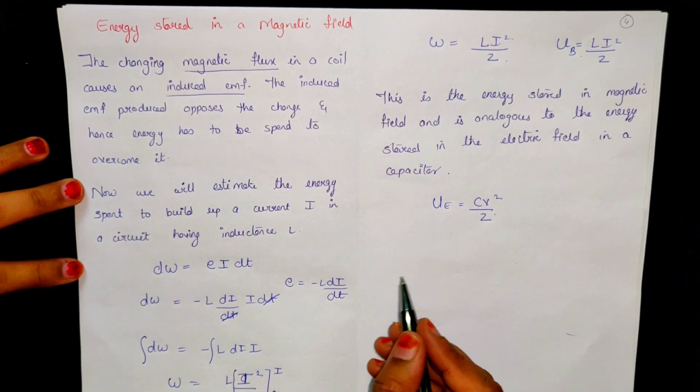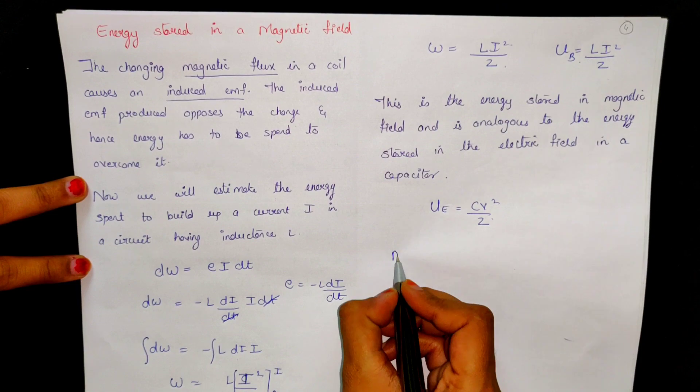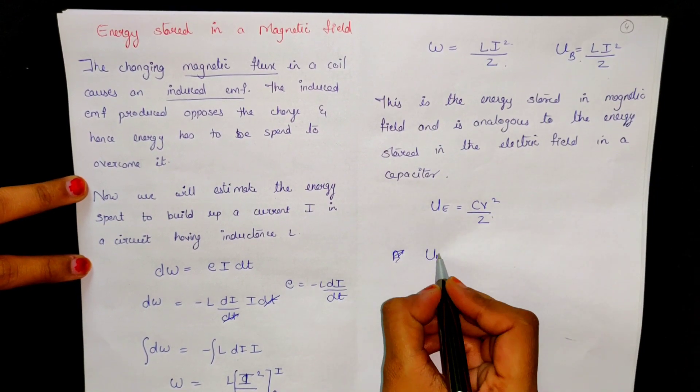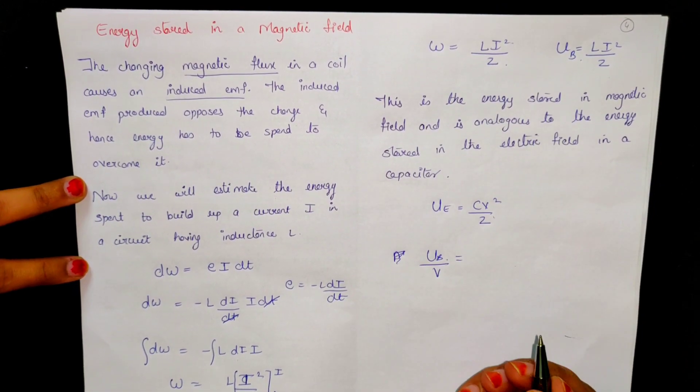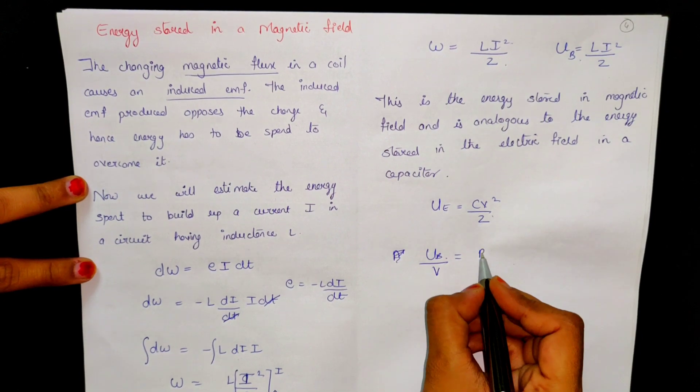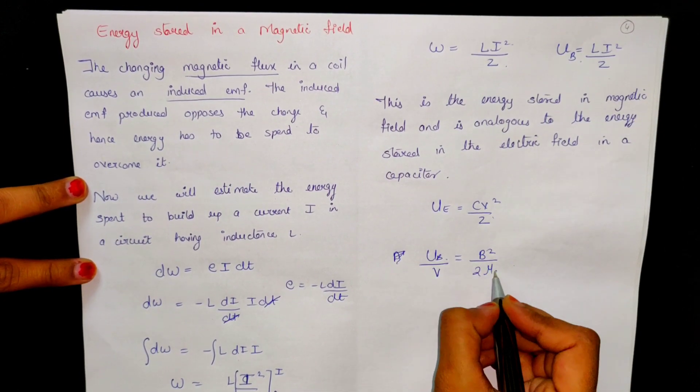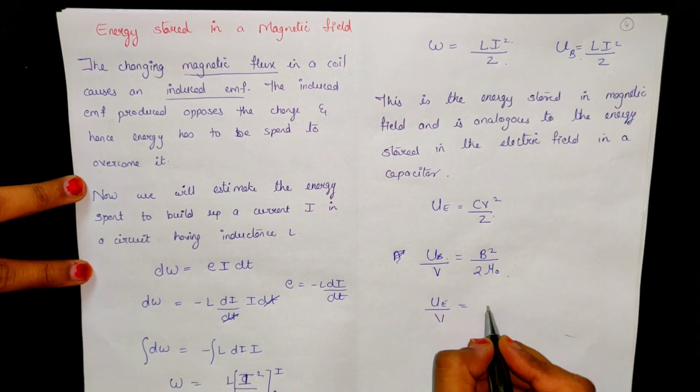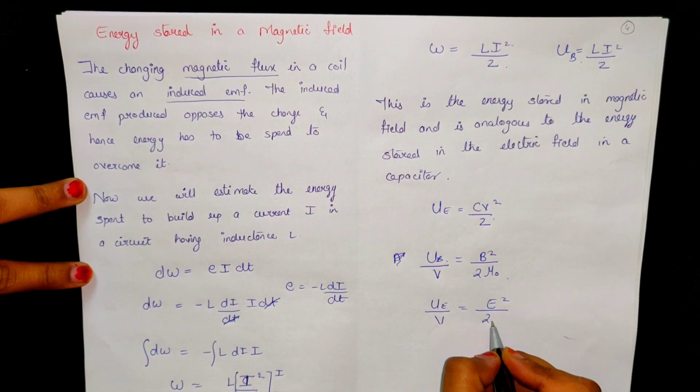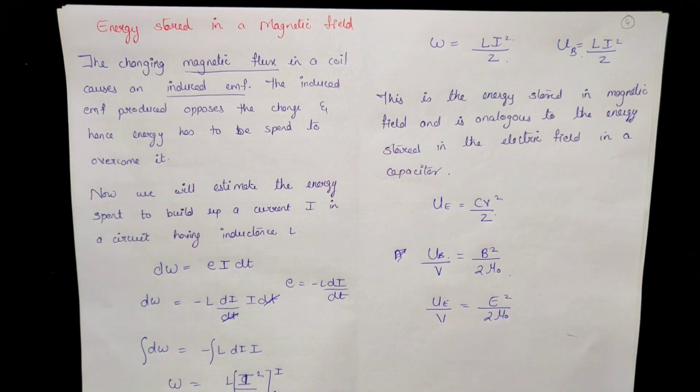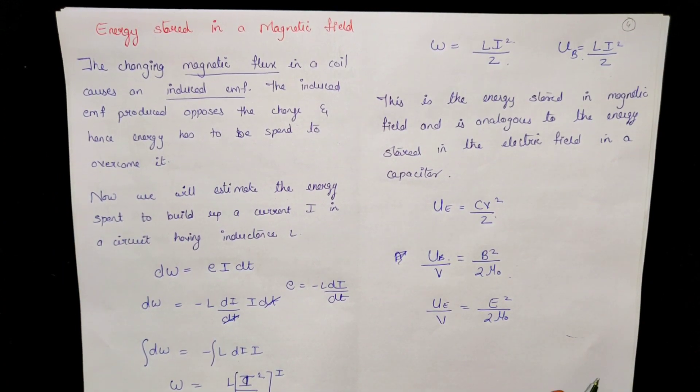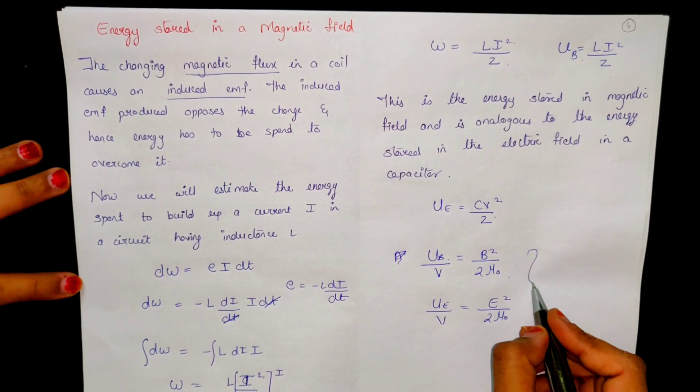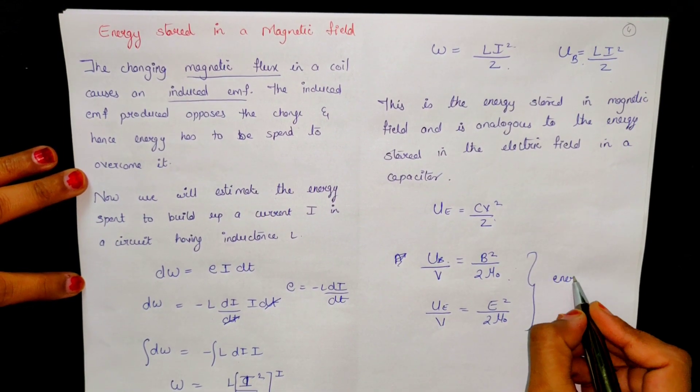I will tell you another thing. If we take out magnetic energy, U_b per unit volume, this will be b square by 2 mu naught. If we take out electrical energy, electrostatic energy per unit volume, this will come E square by 2 mu naught. This is how it is. We also know the name of energy density.